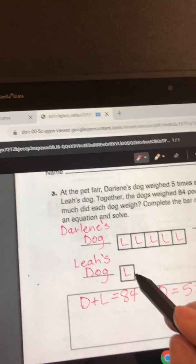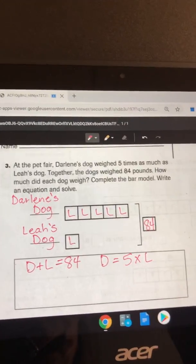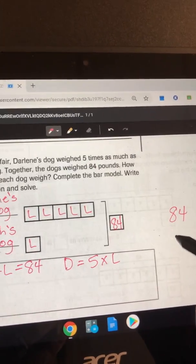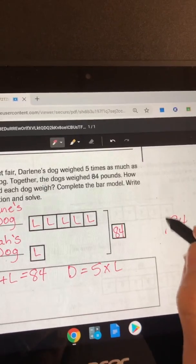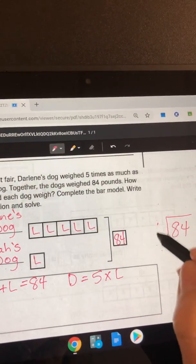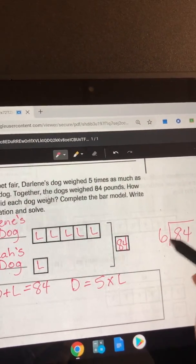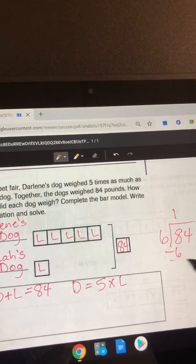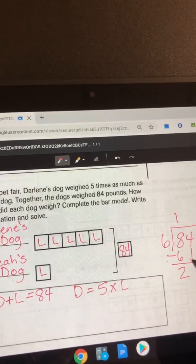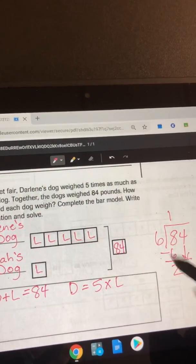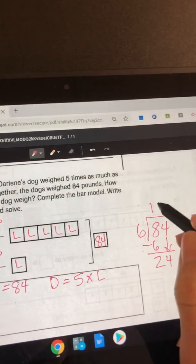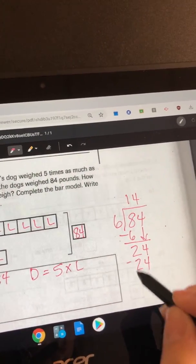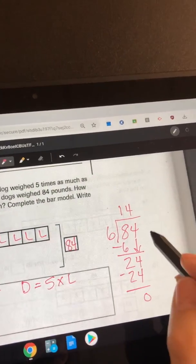So I'm gonna do that by dividing. 84 is what we have here, divided into six boxes. One times six is six. Eight minus six is two. Two is less than six, so I can bring down my four. Six goes into 24 four times. Four times six is 24. When you take that away, you get zero. Zero is less than six. There's nothing left to bring down.